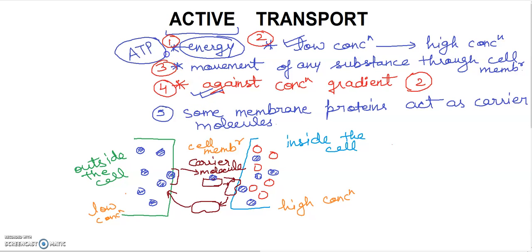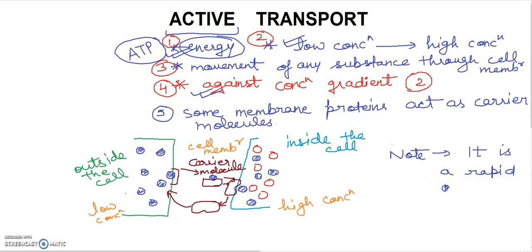Key points about active transport: energy requirement is in ATP form. Movement is from lower concentration to higher concentration, against the concentration gradient. It is a rapid process and brings about selective uptake of minerals.